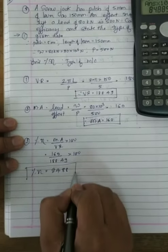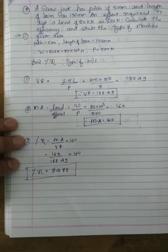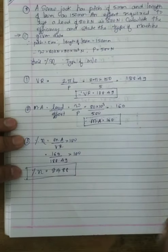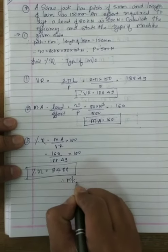Mechanical advantage is 160, velocity ratio is 188.49. So the efficiency is 84.88 percent. As the efficiency is more than 50 percent, the machine is a reversible machine.